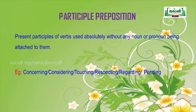The fourth type is participle preposition. These are present participles of verbs used absolutely without any noun or pronoun being attached to them. Examples: concerning, considering, touching, respecting, regarding, pending.